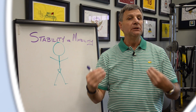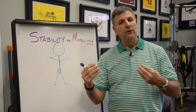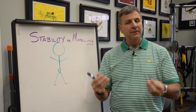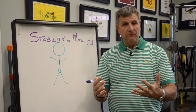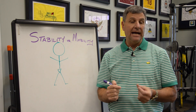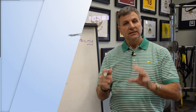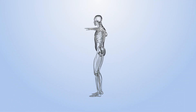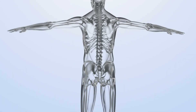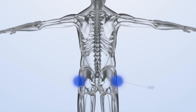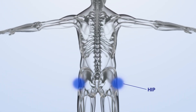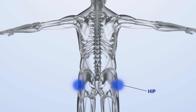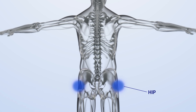One of the things we talk about is the stability-mobility continuum. It's an interesting concept — if you think about normal movement in the human body, joints are either designed to be relatively stable or they're designed to be mobile to produce movement. If you look at the hips, our hips are designed to be very mobile. They move in three planes: sagittal, coronal, and transverse plane.